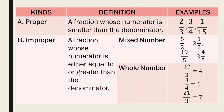Let us now proceed to the discussion of basic concepts of fractions. For the kinds of fractions, we have proper and improper fractions. Under improper fractions, we have mixed numbers and whole numbers. A proper fraction is a fraction whose numerator is smaller than the denominator. Examples are two-thirds, three-fourths, and one over fifteen. In two-thirds, 2 is smaller than 3. In three-fourths, 3 is smaller than 4. And 1 is smaller than 15. As simple as that.